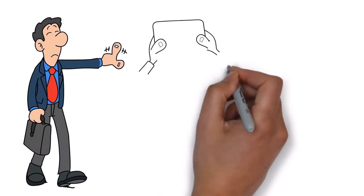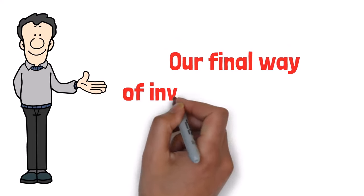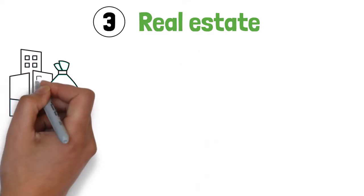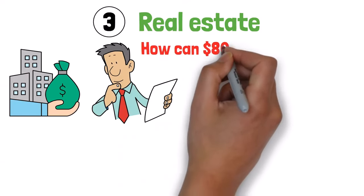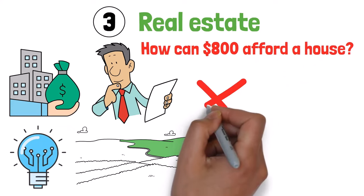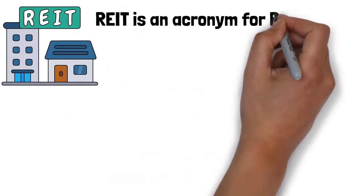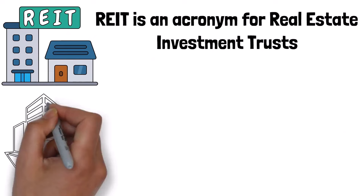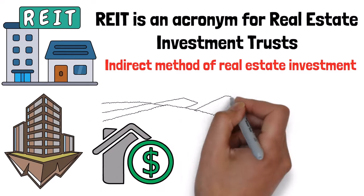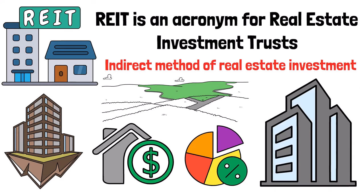But what if you're not a fan of stocks or wish to invest your $800 passively some other way? Well, this leads us to our final way of investing your $800. Number three, real estate. Now, I'm sure you've heard about real estate investment and you're probably wondering, how can $800 afford a house? Well, thanks to technology, you don't really need to own actual property to make money from real estate. You can simply invest in a REIT. REIT is an acronym for real estate investment trusts. Real estate investment trusts are companies that invest in real estate. It's more like an indirect method of real estate investment because you're not actually owning any portion of the real estate, but rather you're owning a portion of the company that invests in real estate.